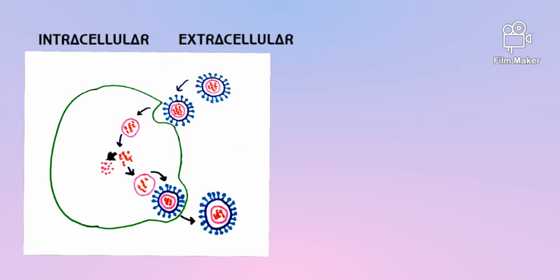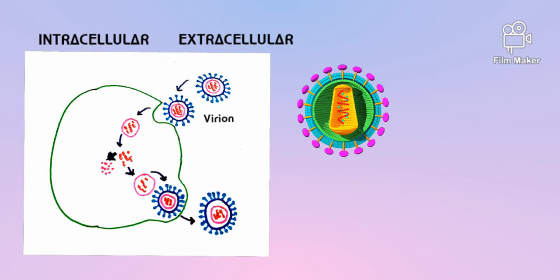Extracellular viruses are called virions — the virus before they invade the host cell. During this state, the virus consists of a protein coat, the capsid, that surrounds the nucleic acid core containing the viral genome, which exists either in single or double-stranded DNA or RNA. The capsid of a virus with an enclosed viral genome is called the nucleocapsid, which is enclosed with the outermost layer of the virus.